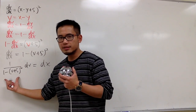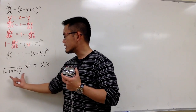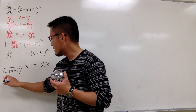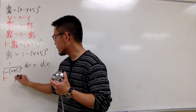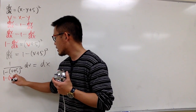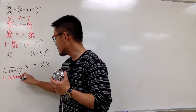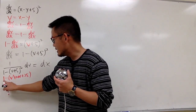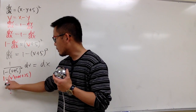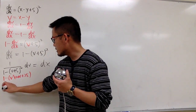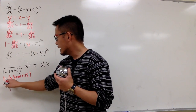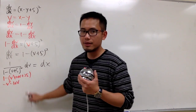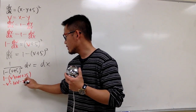I need to integrate, but first I fix the denominator. Expanding (v + 5)² gives v² + 10v + 25, so 1 minus that gives -v² - 10v - 24, which simplifies to negative v² - 10v - 24.